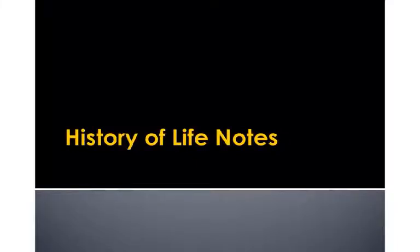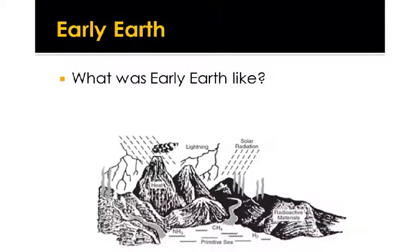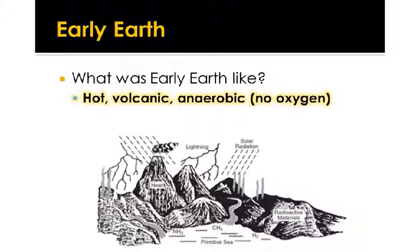This video walks you through some hypotheses about the history of life — where did life come from? First, let's talk about what scientists think early Earth was like. Scientists think that early Earth had lots of volcanoes, lightning, and was a really extreme environment. It was hot, volcanic, and anaerobic. 'An-' in front of a word means 'not,' so anaerobic means no oxygen — there was no oxygen on early Earth.